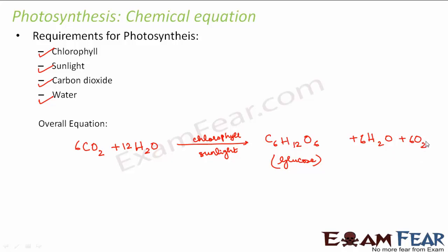Oxygen is a byproduct of the process of photosynthesis. This oxygen is released out of the plants. That is why plants take in carbon dioxide and give out oxygen — because plants need carbon dioxide to perform photosynthesis, which is the process by which they prepare their food. So they take in carbon dioxide and when they perform photosynthesis, oxygen is emitted as a byproduct and released back to the atmosphere.